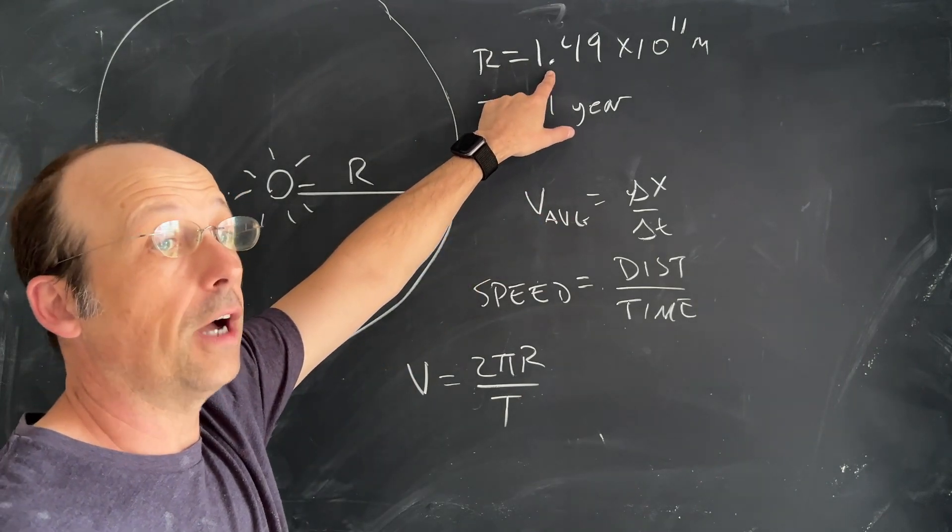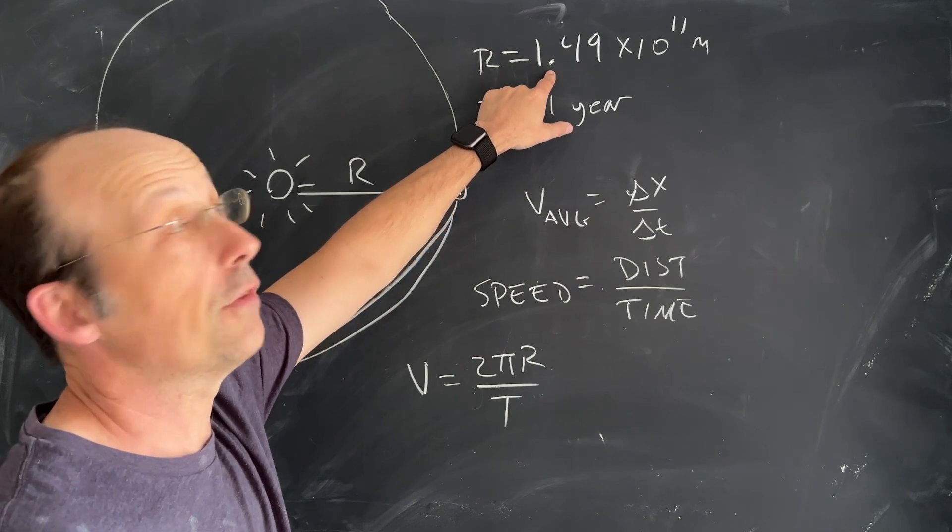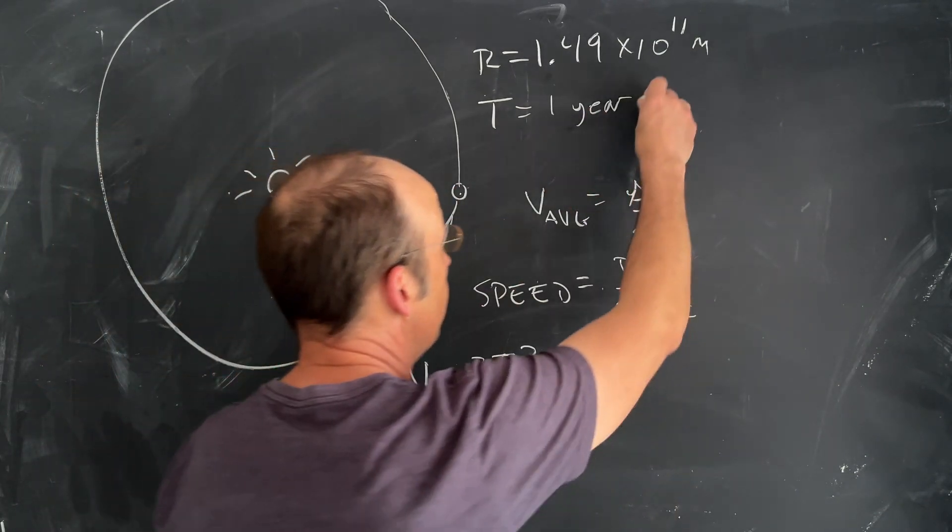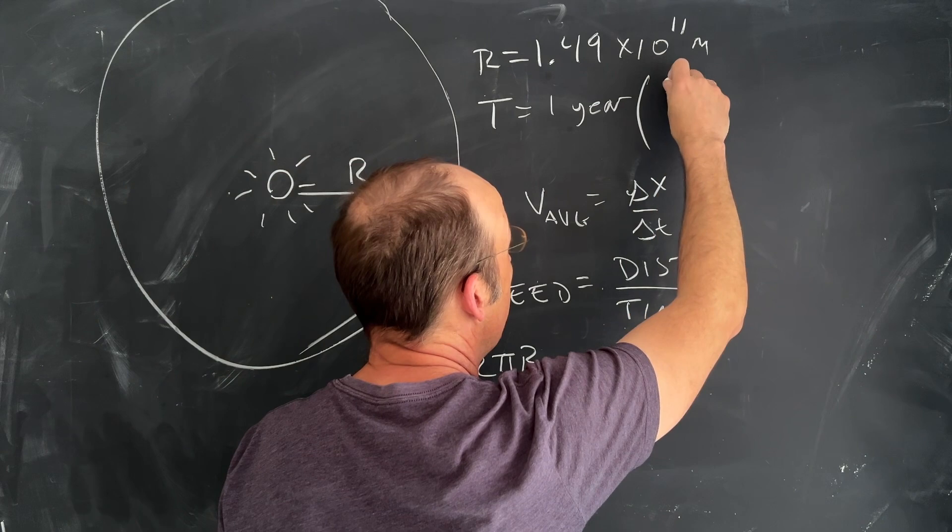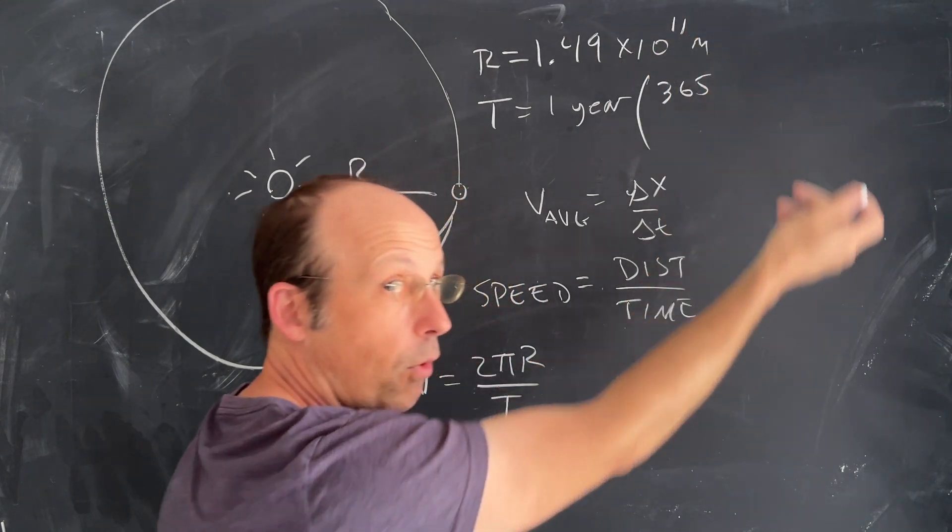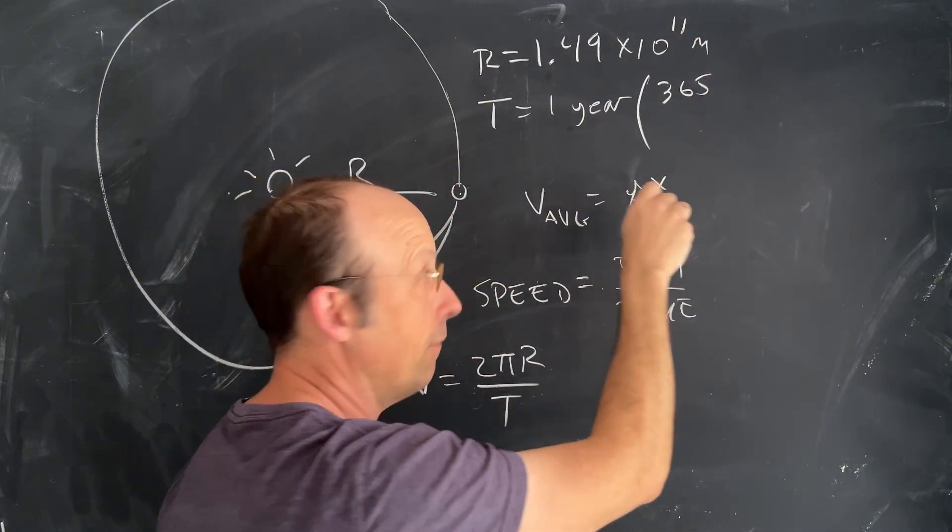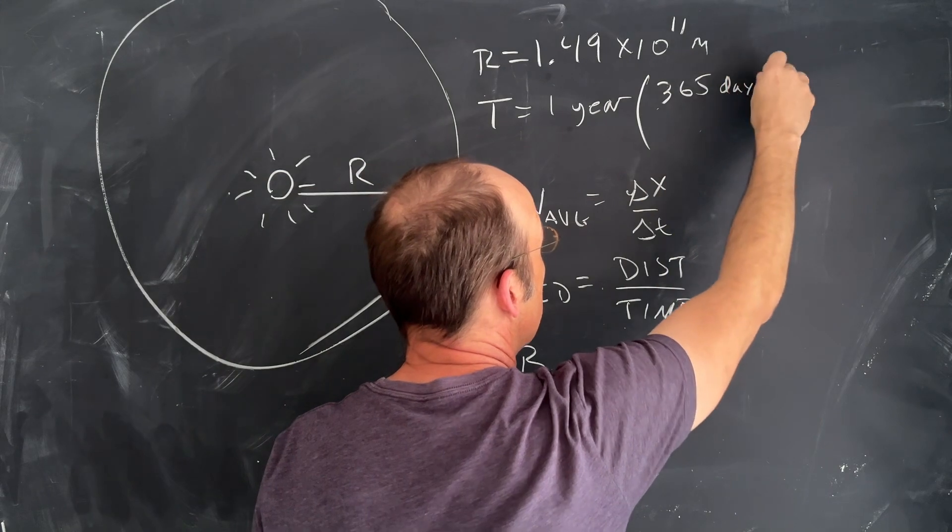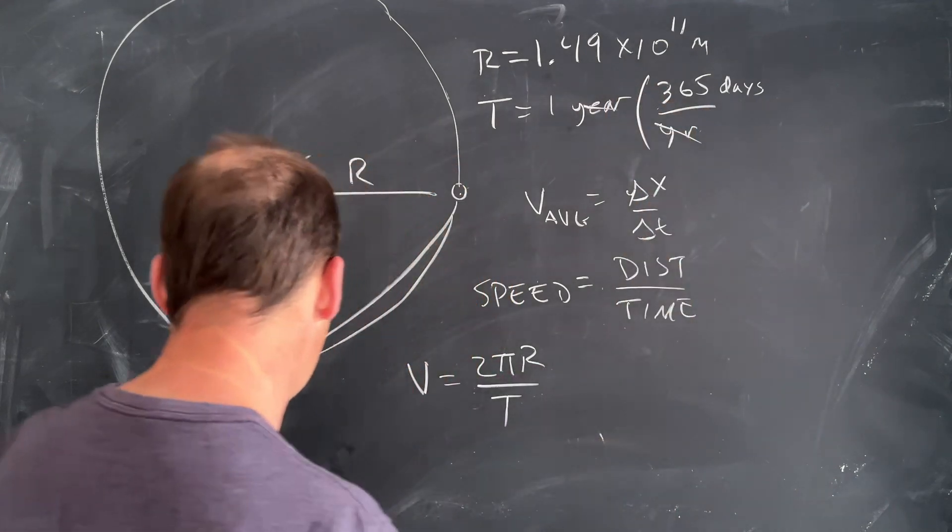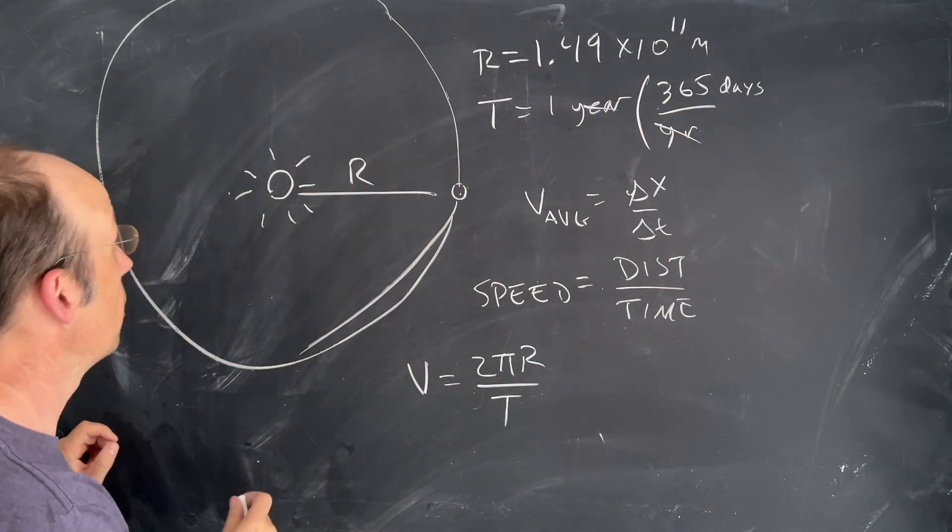The orbital radius of the Earth is 1.49 × 10^11 meters, which is very large. For the year, we'd like to get that in seconds—I like to do this in meters per second. Let's convert years. I know that one year has 365 days, a little bit more because of leap year, but we can leave it like this.